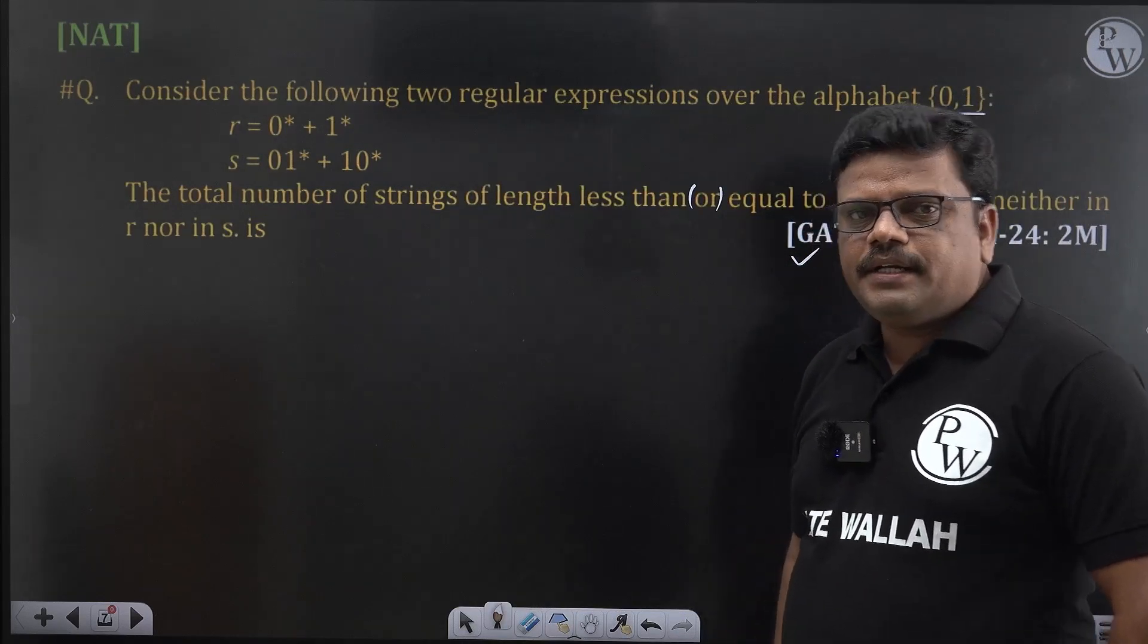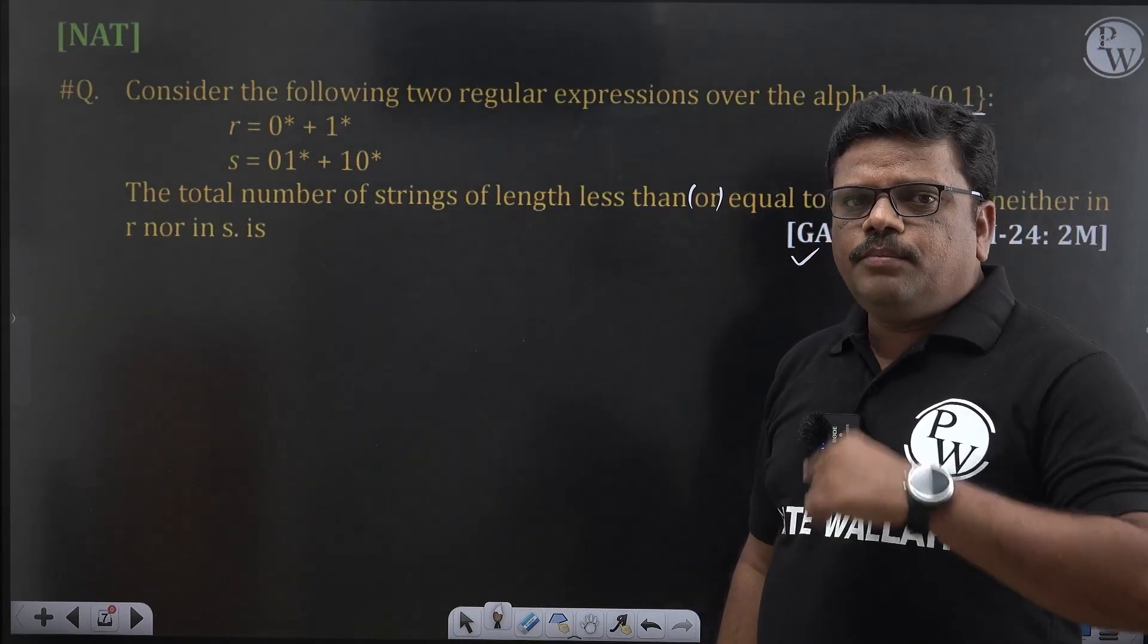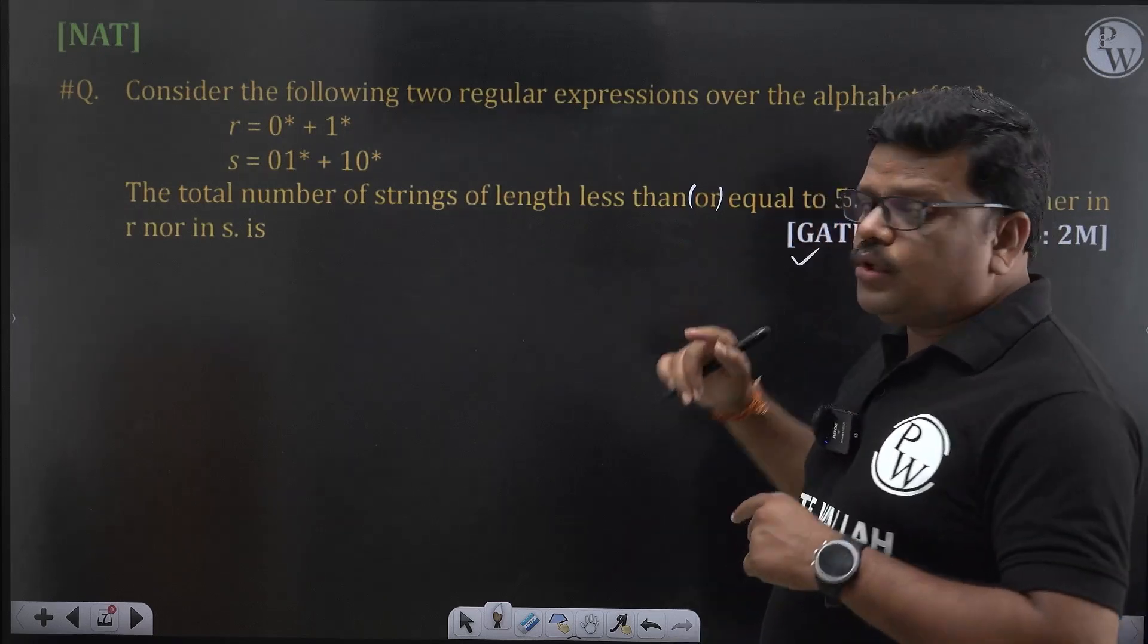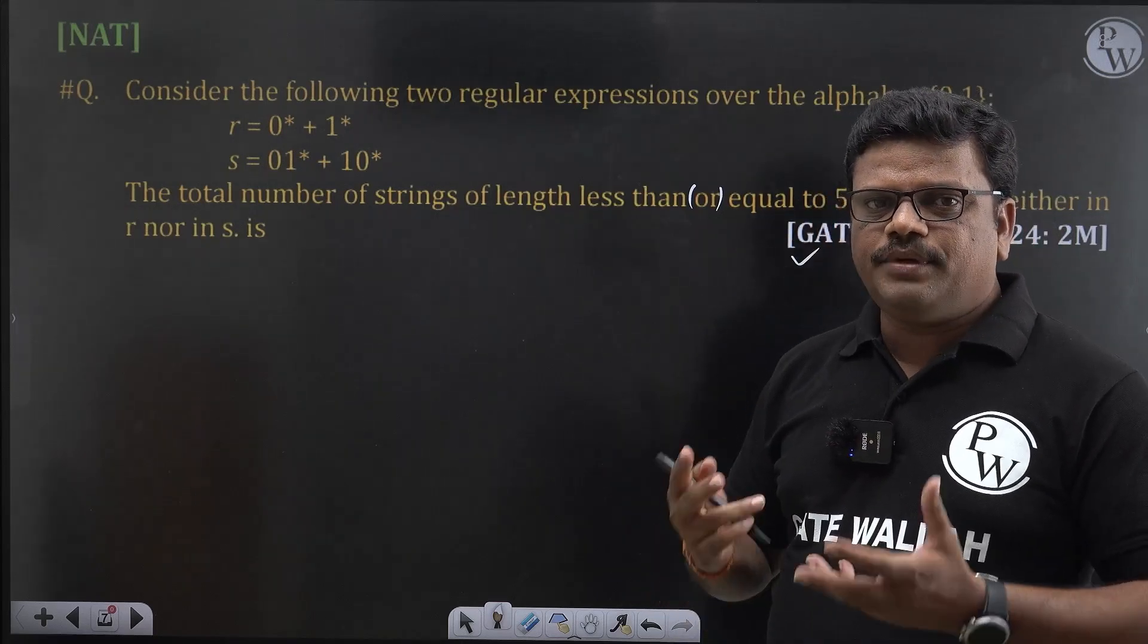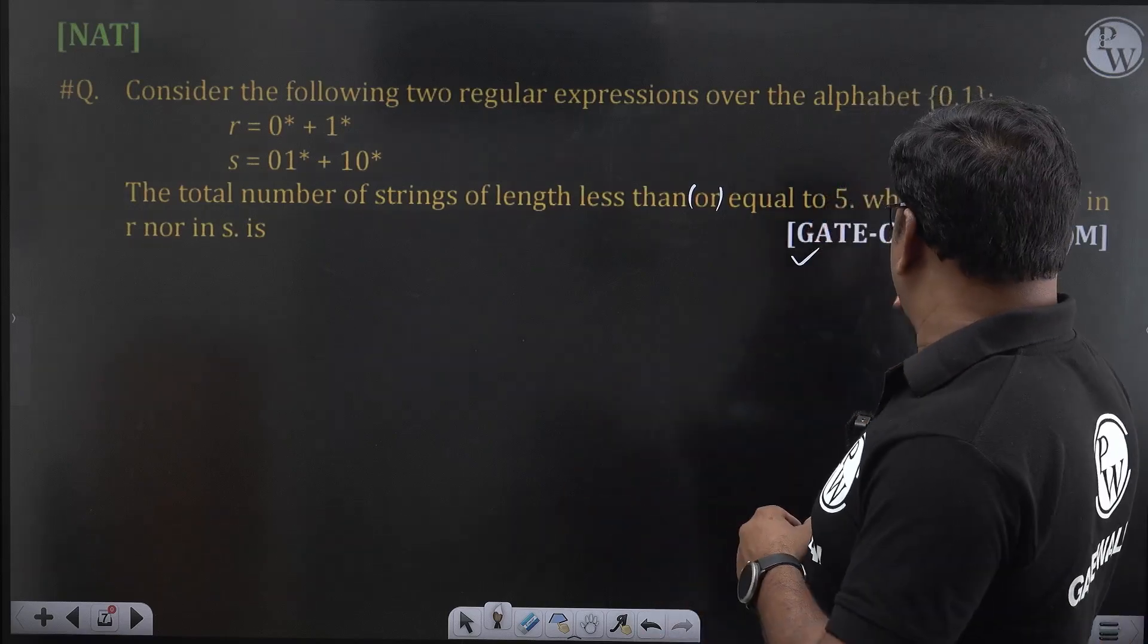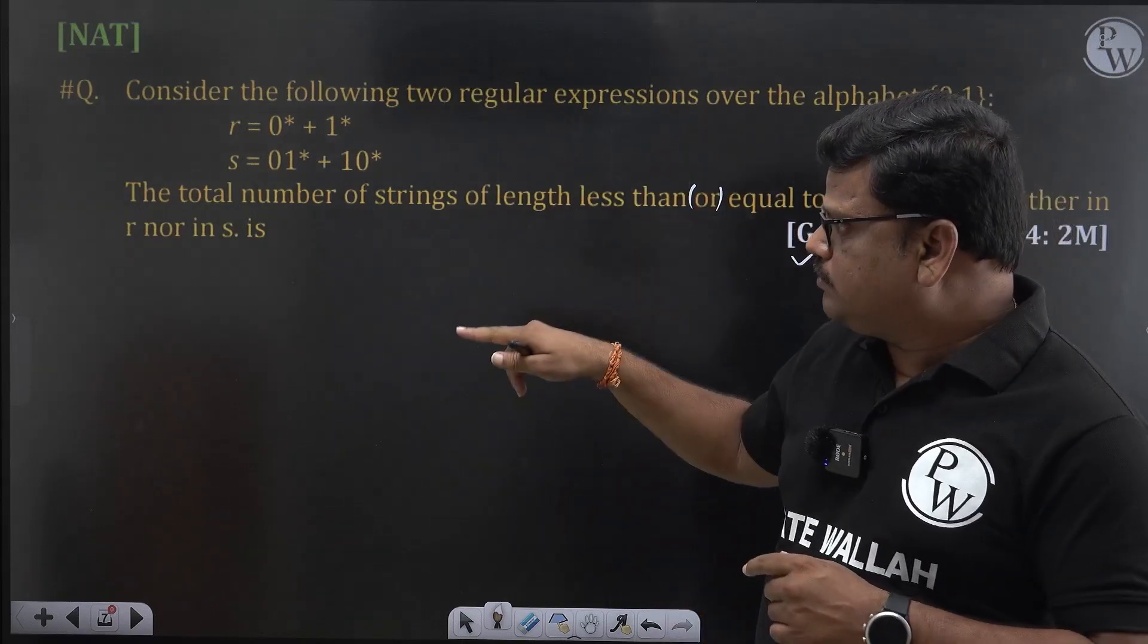Over this alphabet, all possible less than or equal to 5, total how many strings possible? First we need to see how many strings possible, but the question is which are neither in R nor in S.